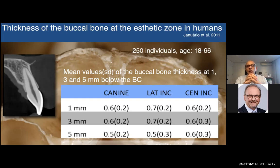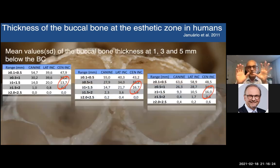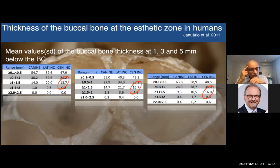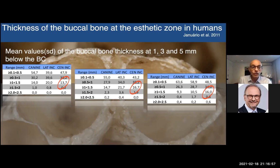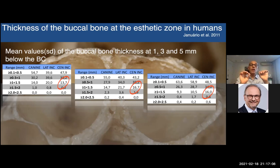The thickness of the bundle bone is, let's say, half a millimeter — 0.4, let's round it to half millimeter. Let me show you the frequency distribution of this sample of 250 individuals. If I take a look at the table to your left, more than half — 54% of the canines — one millimeter below the buccal crest has a thickness between 0.1 and 0.5 millimeters. This means the entire thickness of this buccal wall is made of bundle bone — a bone very unstable because it's just mineralized periodontal ligament, and it's not going to stay for long.